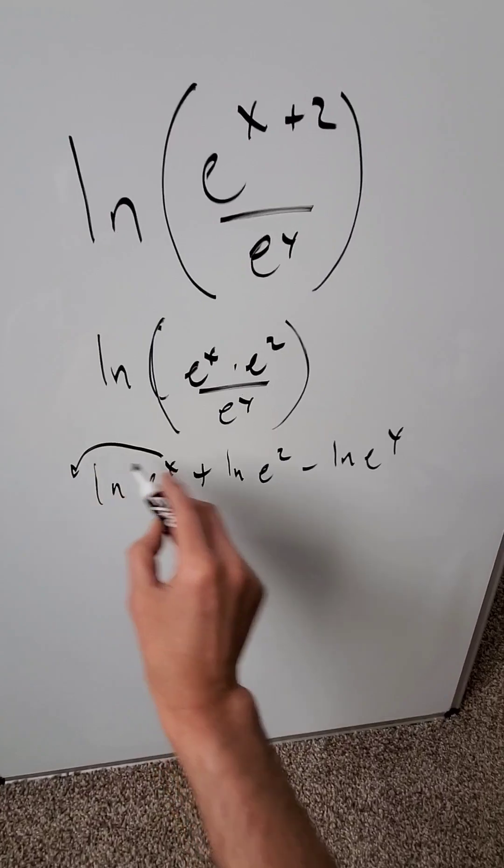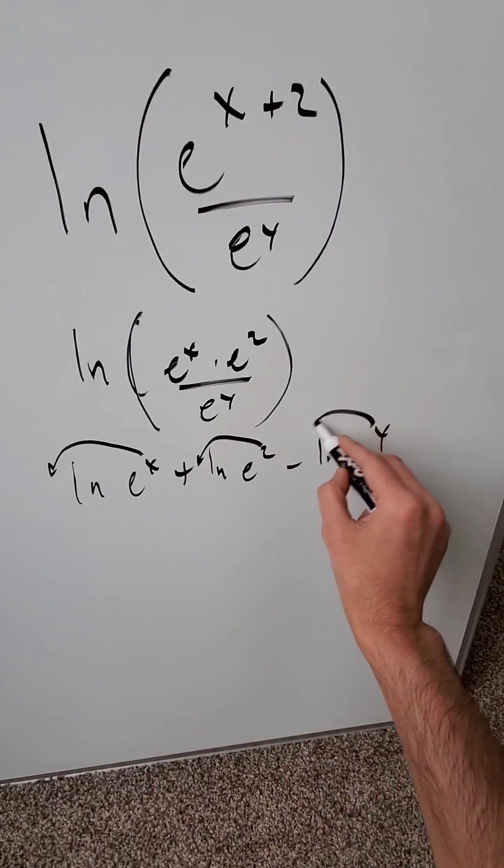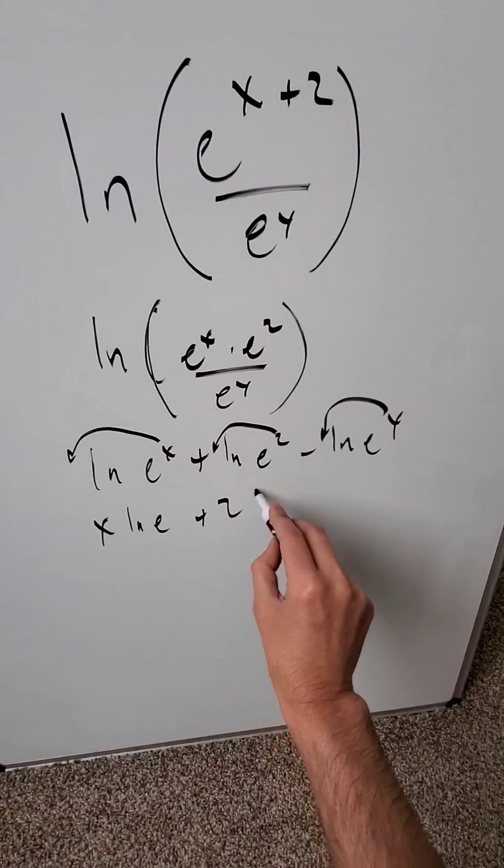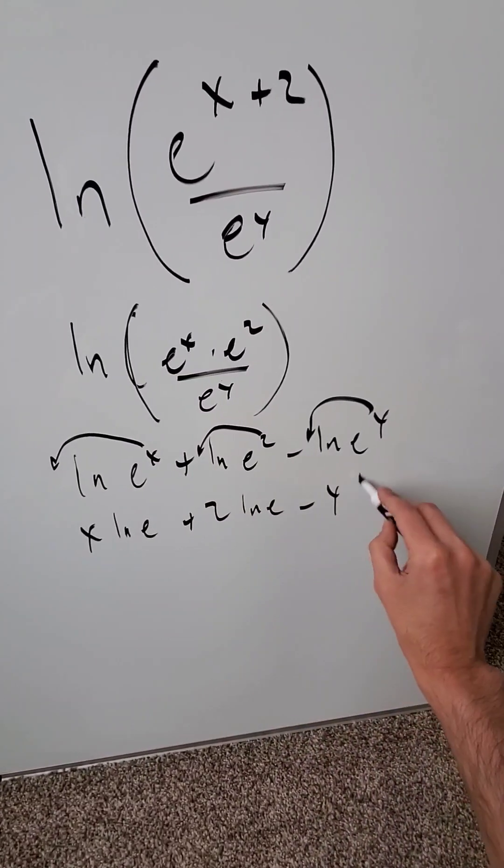All of these exponents can be transported here as coefficients. You know it's a very legitimate property. I have x natural log e plus 2 natural log e minus y natural log e.